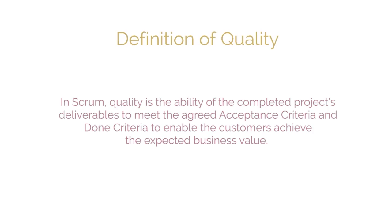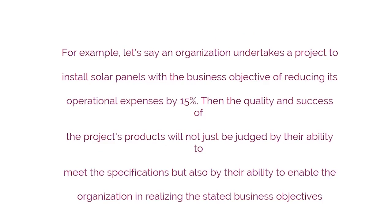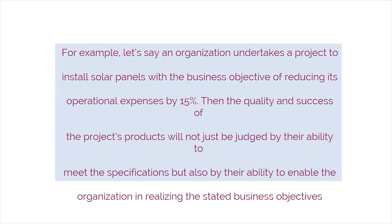Now, let's look at how Scrum defines quality. In Scrum, quality is the ability of the completed project's deliverables to meet the agreed acceptance criteria and done criteria to enable the customer to achieve the expected business value. For example, let's say an organization undertakes a project to install solar panels with the business objective of reducing its operational expenses by 15%. Then the quality and success of the project's products will not just be judged by their ability to meet the specifications, but also by their ability to enable the organization in realizing the stated business objectives.